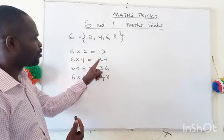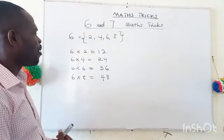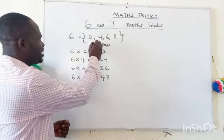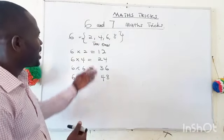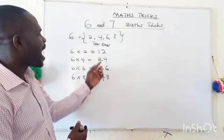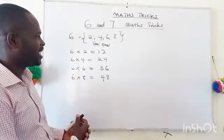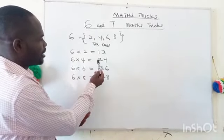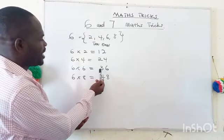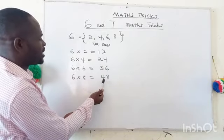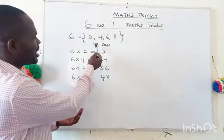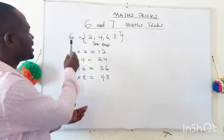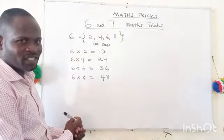Now you can see another beautiful pattern: one, two, three, four. One thing to also notice is that these are our ones column and these are our tens column. The numbers in the tens column are half of the numbers in the ones column. One is half of two, two is half of four, three is half of six, and four is half of eight.